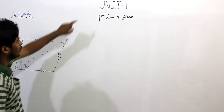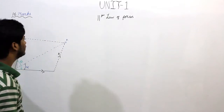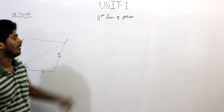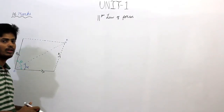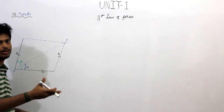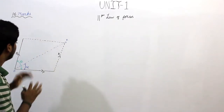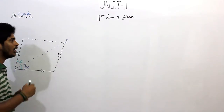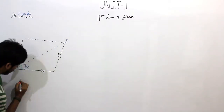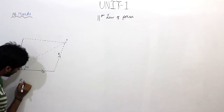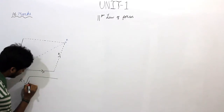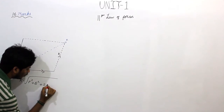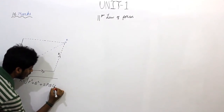Let's talk about the first type of 16-mark question. To solve the problem, r is equal to the root of p squared plus q squared plus two pq cos theta.